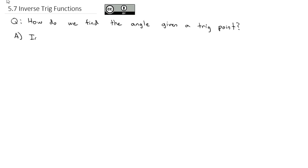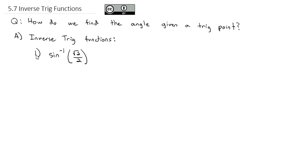This sets up the idea of inverse trig functions. For example, if I wanted to find the sine inverse of the square root of 2 over 2. First, a bit of notation: that little negative 1 on the sine is not an exponent — that symbol actually means sine inverse. Sometimes to clarify, you'll see it called not the sine inverse but the arc sine of the square root of 2 over 2. That's the exact same thing. What it's asking for is what point on the unit circle helps us find the angle we are looking for.